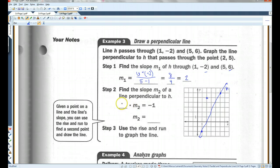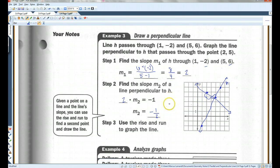Now, they have this method where I take this and go, okay, what do I have to multiply two by to get negative one? I'd recommend you just take this, flip it over, and change the sign. Negative one half. So, from here, use the rise and run to graph the line. So, I'm going to go down one over two. And if my line was straight, that would be a right angle.